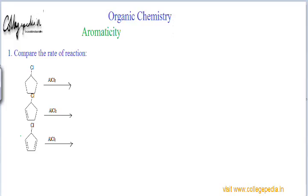We will see in greater detail later how AlCl3 breaks that bond and how a carbocation is formed. For now, we just need to know that AlCl3 breaks a C–Cl bond and generates a carbocation. Three carbocations are generated from the three reactions. The rate of reaction depends upon the stability of the intermediate formed — if the intermediate is more stable, the rate of reaction will be higher. So to compare the rate of reaction, we compare the stability of the three carbocations.